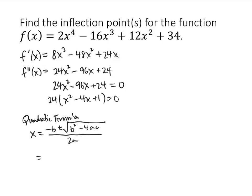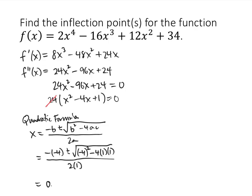In this case, we can divide both sides by 24, so we just have x squared minus 4x plus 1. So my b is negative 4, giving us minus minus 4 plus or minus the square root of minus 4 squared minus 4 times 1 times 1, all divided by 2a. When we work that out in our calculator, we're going to get two solutions: 0.268 and 3.732.